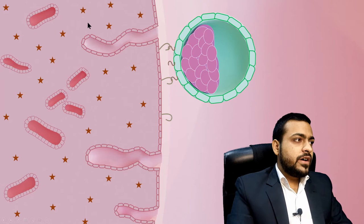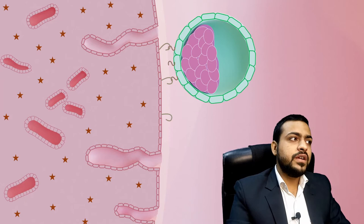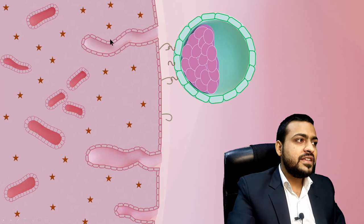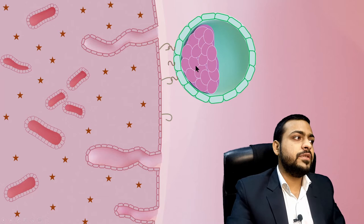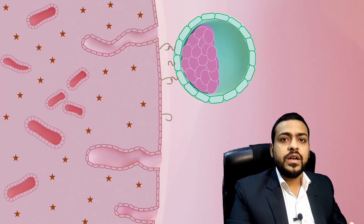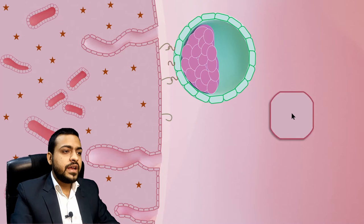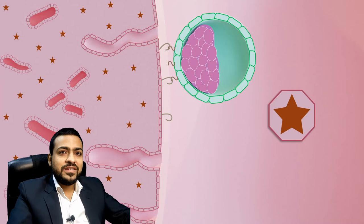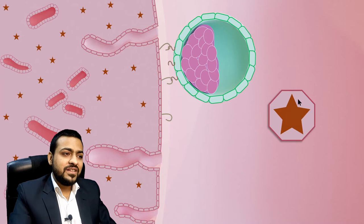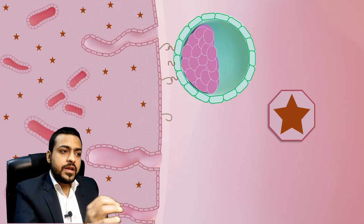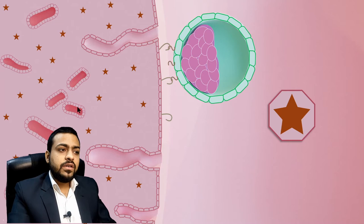Meanwhile, the endometrium during this time period is well prepared for implantation. First, the glands become more specialized and more tortuous, and they start secreting uterine milk that provides nutrition to the embryo. Secondly, the endometrium becomes more vascular and more edematous. Thirdly, the endometrial cells become filled with glycogen and fat, and as they become filled with glycogen and fat they become polyhedral shaped. These cuboidal cells, as they become filled with fat and glycogen, are now called decidual cells.